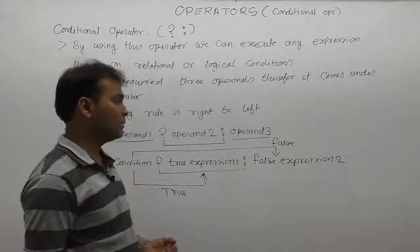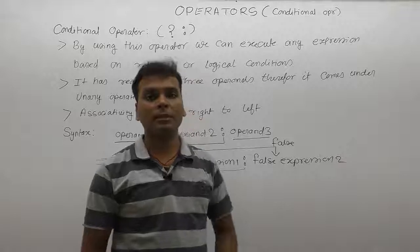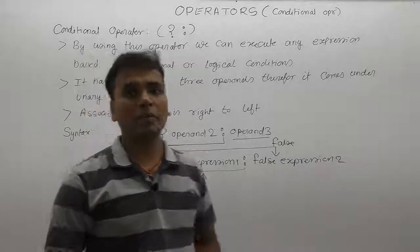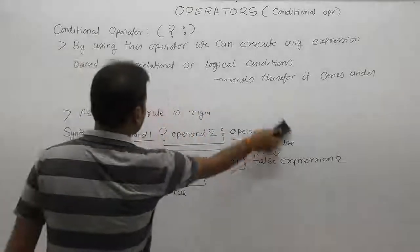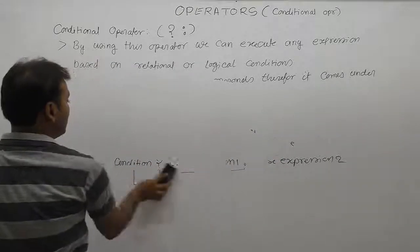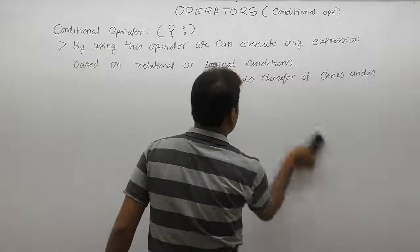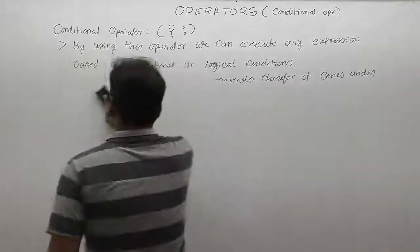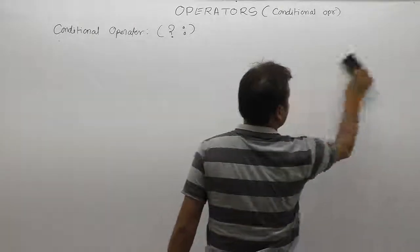If condition is false, then the result is from expression 2. To be clear, the property of ternary operator: first operand must be condition, second operand must be true expression, third operand must be false expression. Let's see some basic examples about ternary or conditional operator.